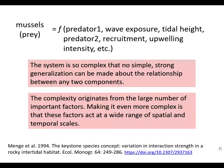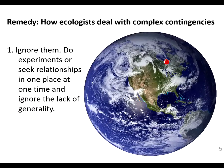Making it even more complex is that these factors act at a wide range of spatial and temporal scales. So, how do ecologists deal with complex contingencies that stand in the way of strong generalizations?